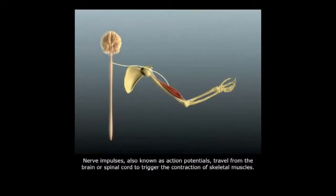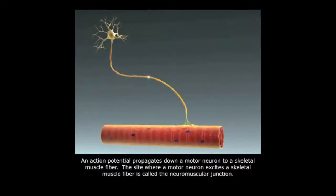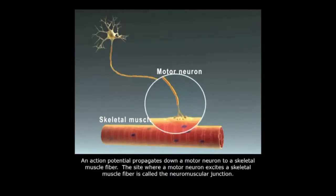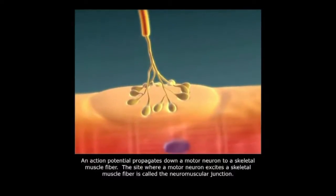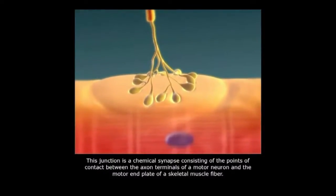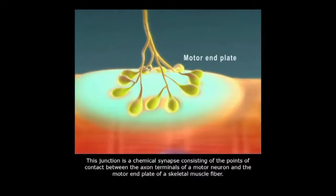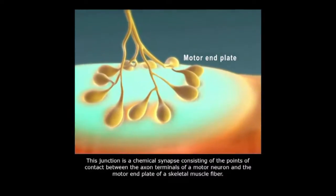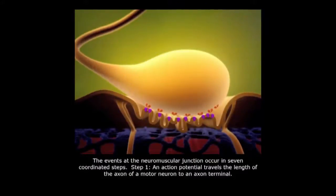Nerve impulses, also known as action potentials, travel from the brain or spinal cord to trigger the contraction of skeletal muscles. An action potential propagates down a motor neuron to a skeletal muscle fiber. The site where a motor neuron excites a skeletal muscle fiber is called the neuromuscular junction — a chemical synapse consisting of the points of contact between the axon terminals of a motor neuron and the motor end plate of a skeletal muscle fiber.